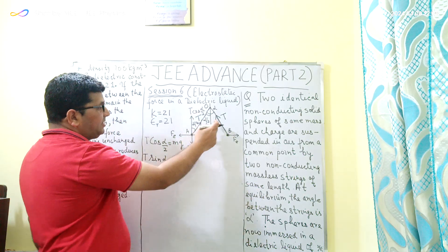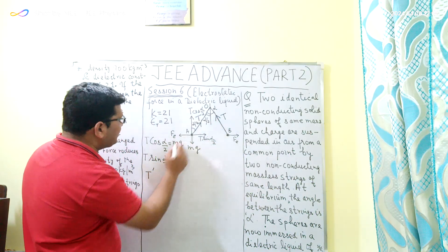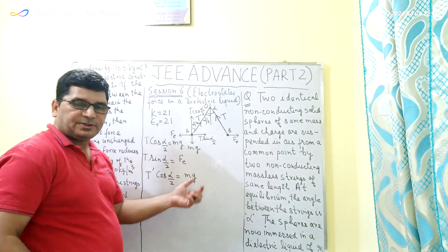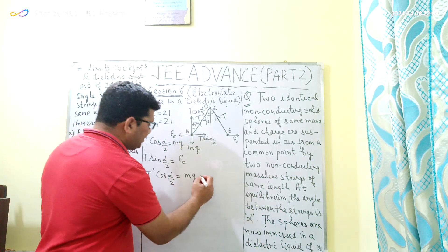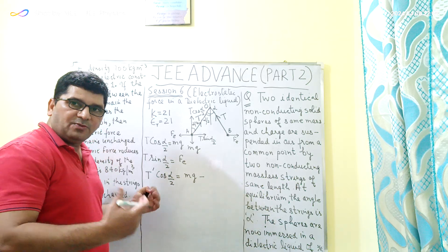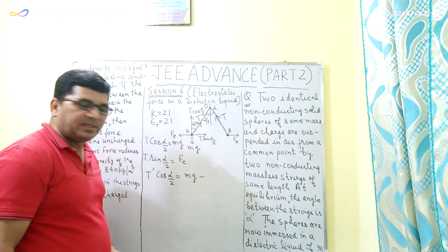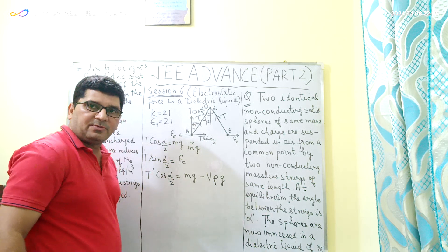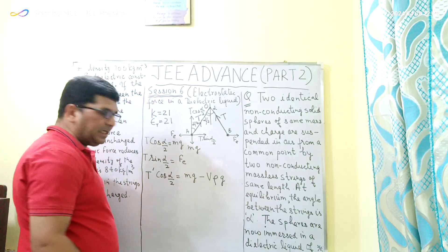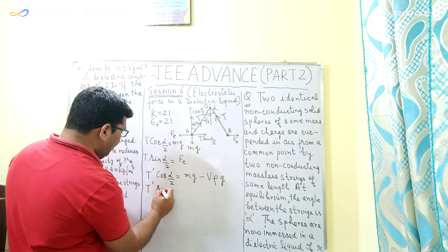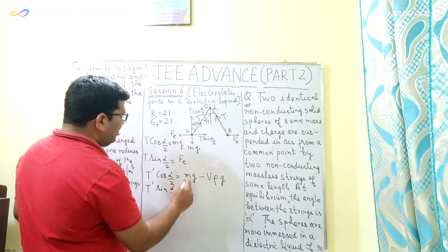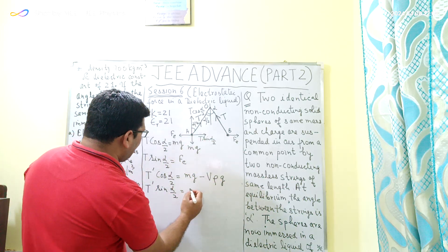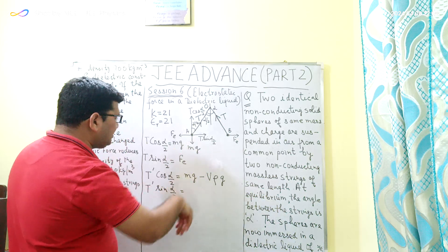Since the angle between the strings remains the same after immersion and the tension is now T dash, I get: T dash cos(alpha/2) = mg − V·rho·g, where the buoyant force V·rho·g acts upward — V is the volume of liquid displaced, rho is the density of the liquid, and g is the acceleration due to gravity. And T dash sin(alpha/2) = Fe dash, the new electrostatic force of repulsion between the two non-conducting spheres.